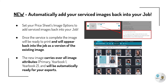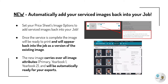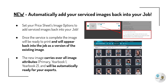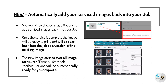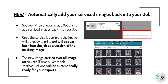Once the service is complete, the image will be ready to print and will appear back into the job as a version of the existing image. That new image carries over all image attributes like primary, yearbook 1, yearbook 2, and will be automatically ready for your exports.